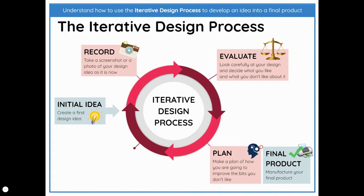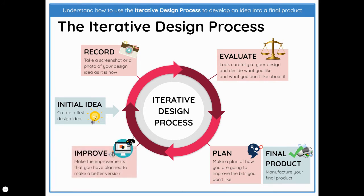The next thing to do is to plan. When we've decided what we don't like about it, we need to make a plan of action for how we're going to improve those bits. Then we need to improve it — make the improvements you have planned to create a better version.